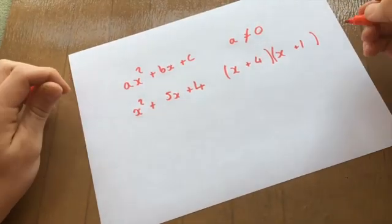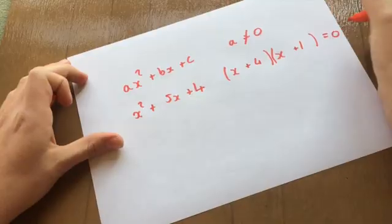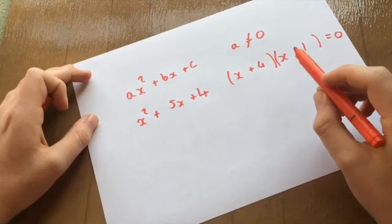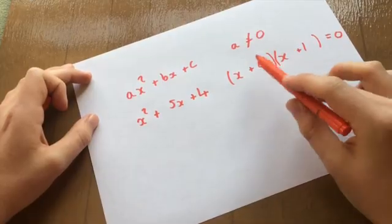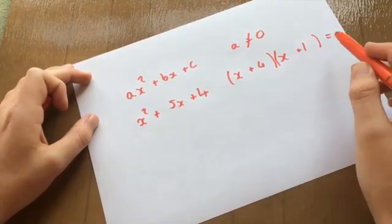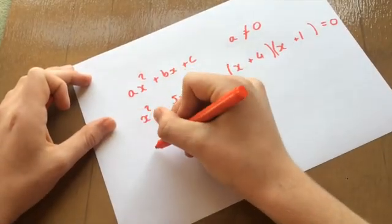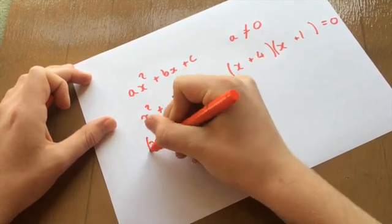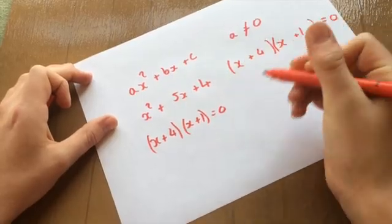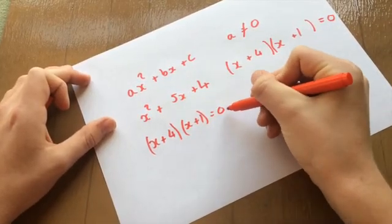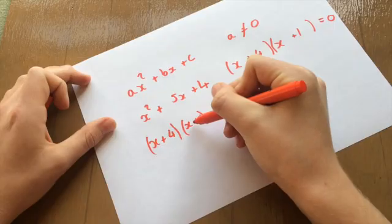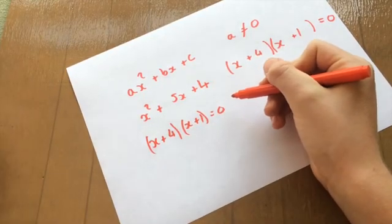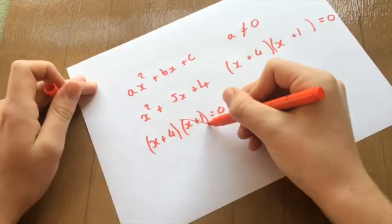And then what you do to solve that is you set that equal to 0, because then what you can do is you can see that to get rid of one of these sets of brackets, you would divide by one of them. So if we had x plus 4, x plus 1, like that, equals 0. To get rid of the 1, you divide it across, which would divide it by 0. And anything, 0 divided by anything, equals 0. So you're essentially just cancelling them out.